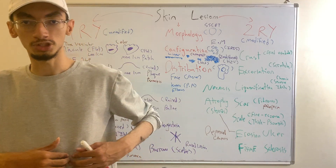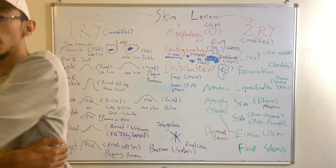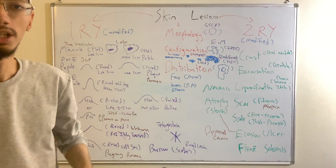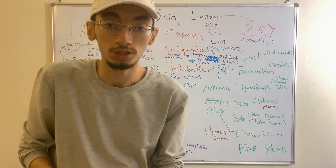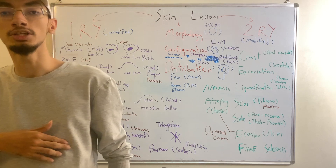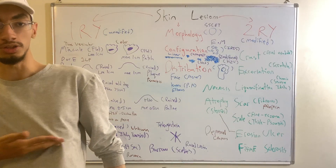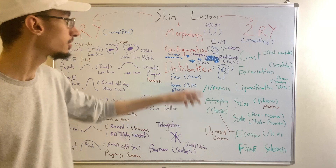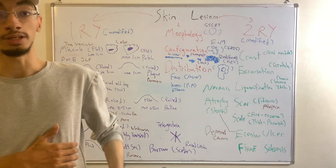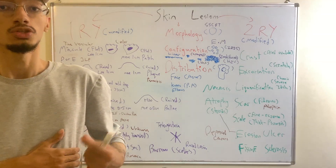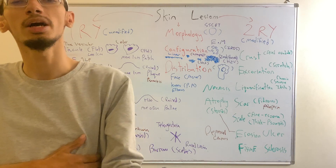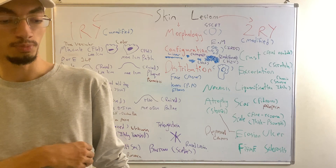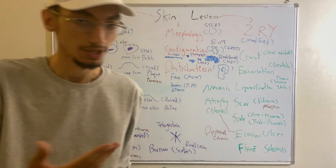In varicella zoster virus or herpes zoster infection, vesicles may present across the upper chest extending to the sides of the body, occupying one or two dermatomes in a linear pattern. This is called a zosteriform or dermatomal pattern — the lesions follow a linear path along one or more dermatomes, which is characteristic of shingles.